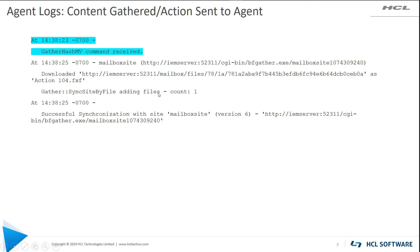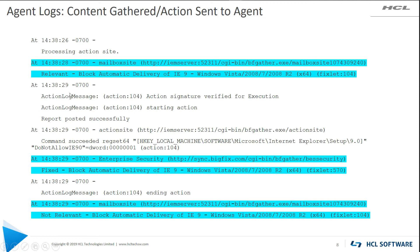Looking at agent logs again — here's a gather hash command received. This is the indicator that a UDP packet has been received and that the BigFix client understands what it needs to do. It's downloading the content of its particular mailbox. The gather hash command came in a couple lines earlier, and the client looks at its mailbox and realizes that 'Block Automatic Delivery of IE9' needs to be done.